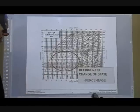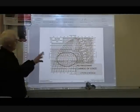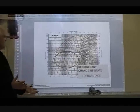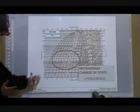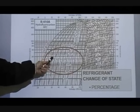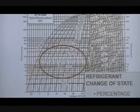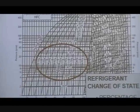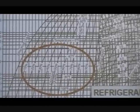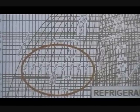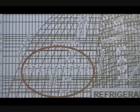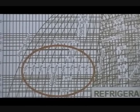Let's say you never achieve 100 percent liquid. Say when that refrigerant is going through your liquid line entering the metering device, you've got 80 percent liquid and 20 percent vapor — it never gets beyond this line here. What does that tell you? You've got condenser problems, or your system is not charged properly. That tells you how important having 100 percent liquid is in that system.